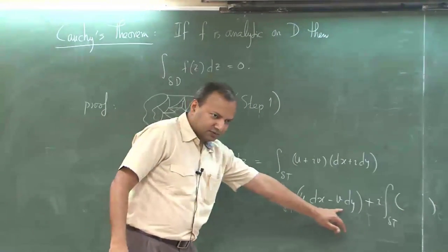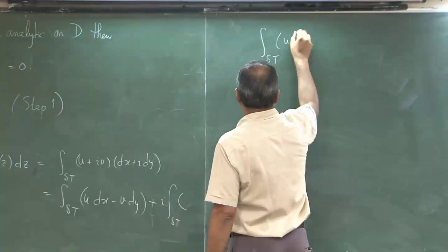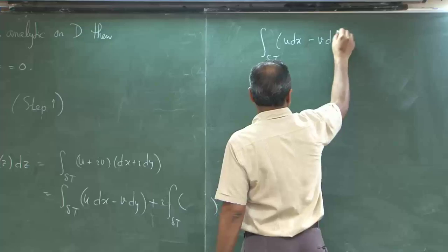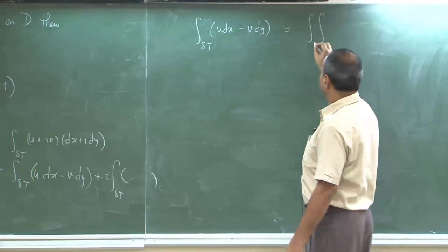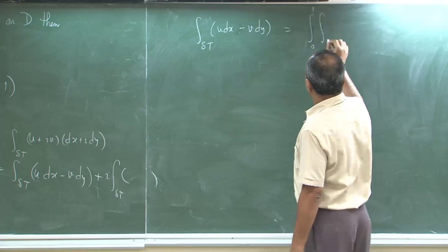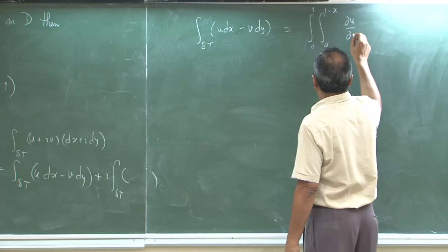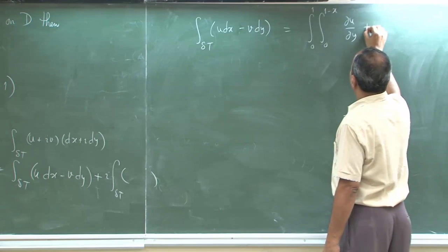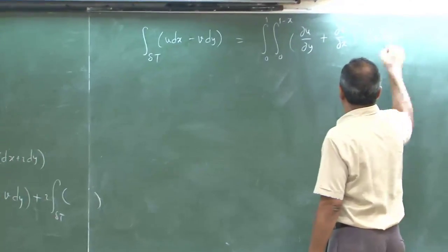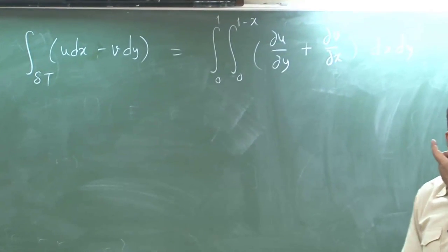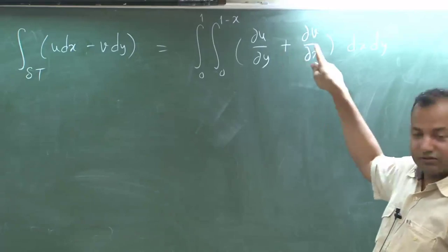Let us focus on this: we can write the integral over the boundary of T of u dx minus v dy as a double integral over the triangle — integrating from 0 to 1 and 0 to 1 minus x — of ∂u/∂y plus ∂v/∂x dx dy. Now, there should be a plus, and we claim that because of the Cauchy-Riemann equations this equals the negative of itself, so this is 0.